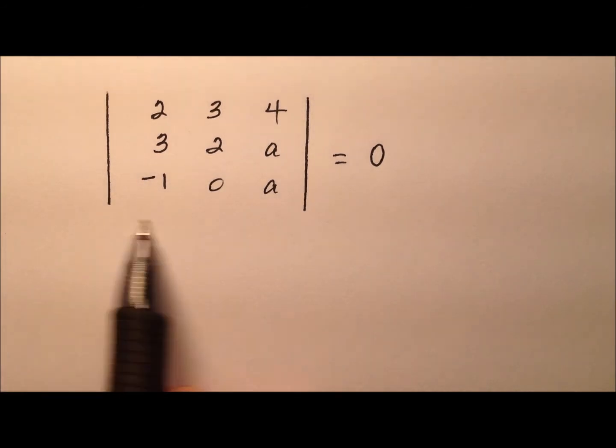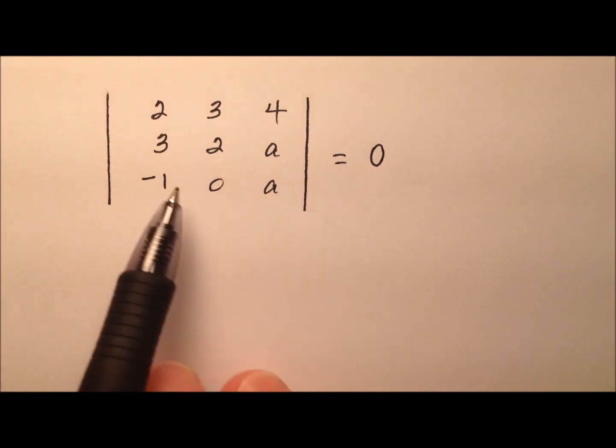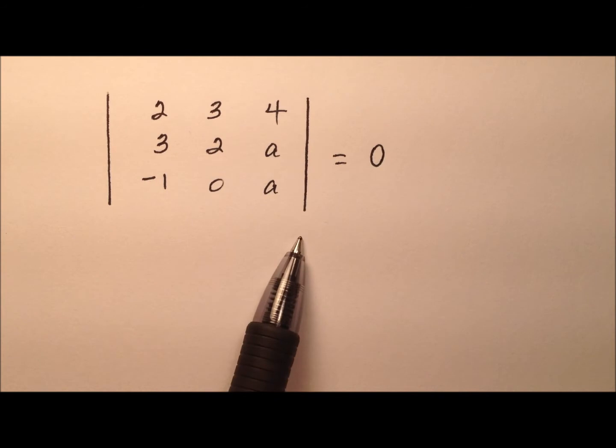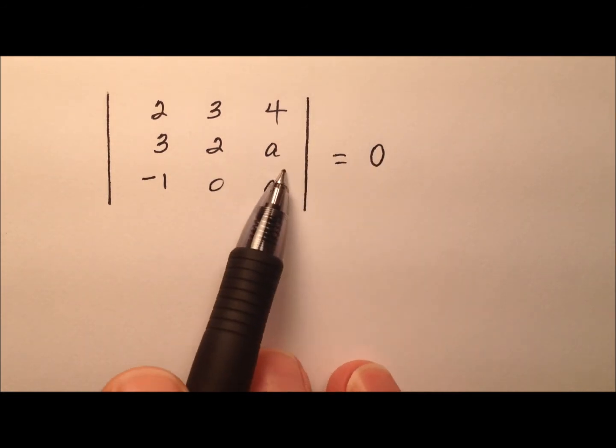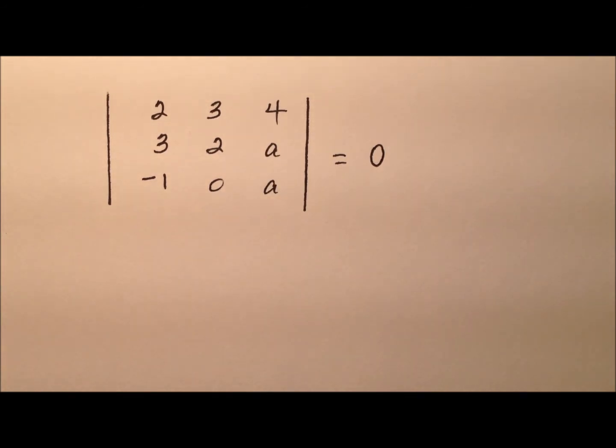In this example, we're going to solve this determinant equation. We have this determinant for this 3 by 3 matrix, and we're going to say it equals 0. We have this variable A in here in a couple of places, so let's go ahead and solve for A.